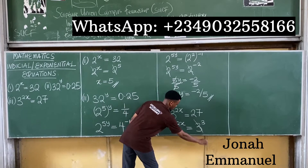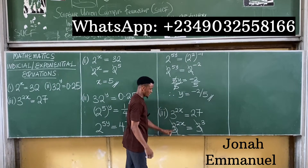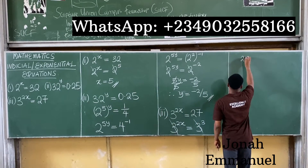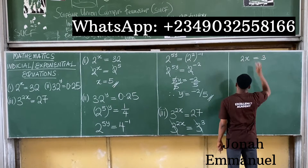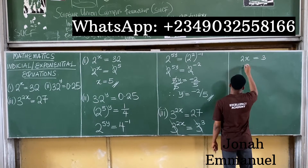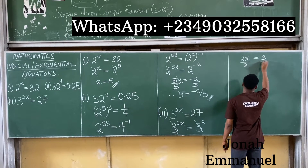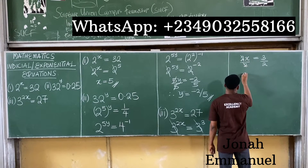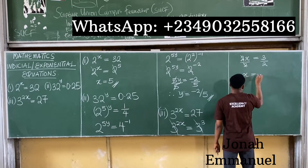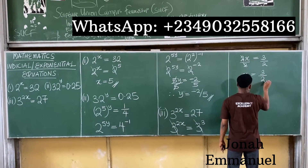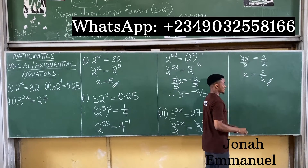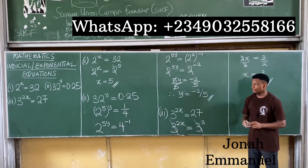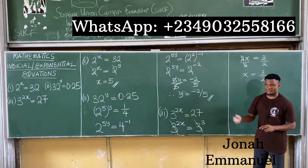We cancel out the base — it goes off. Equating the indices, I have that 2x is equal to 3. To get x, divide both sides by 2. This cancels this, so x is equal to 3 over 2. That's the answer to this question. This is how we solve problems involving indicial or exponential equations.